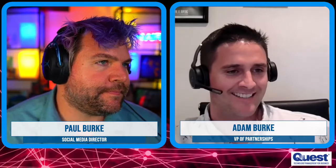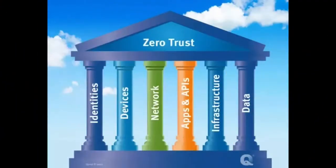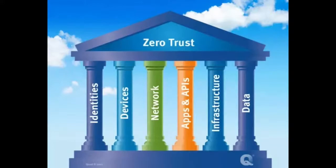Is there a helpful graphic showing the six layers that build zero trust — almost like columns? Adam pulls one up. Nothing but professionalism here! And you've got the Quest logo down in the corner — nice.